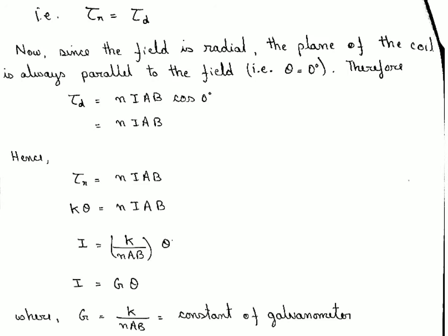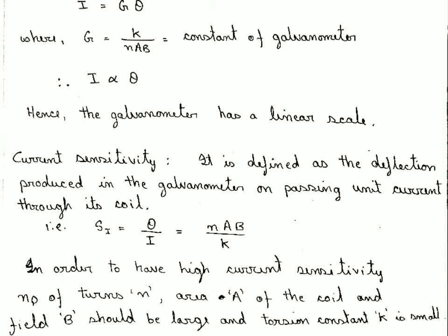From K theta = NIAB, we get the current I = (K / NIAB) × theta. The constant K/(NAB) is called the galvanometer constant G, so I = G × theta. Therefore I is directly proportional to the deflection angle theta, and the galvanometer has a linear scale, allowing us to assign current readings to each scale division.